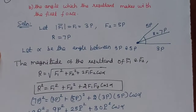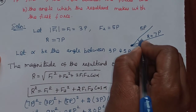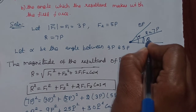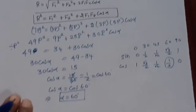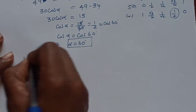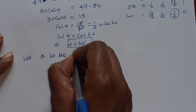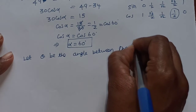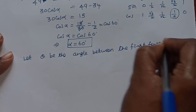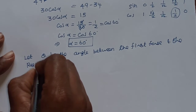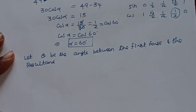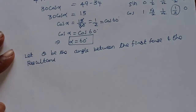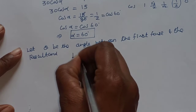Now find the angle which the resultant makes with the first force. This is alpha equals 60°. The first force is 3p and the resultant is 7p. We make the angle theta. Let theta be the angle between the first force and the resultant.